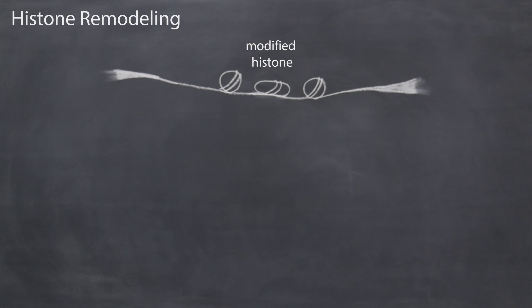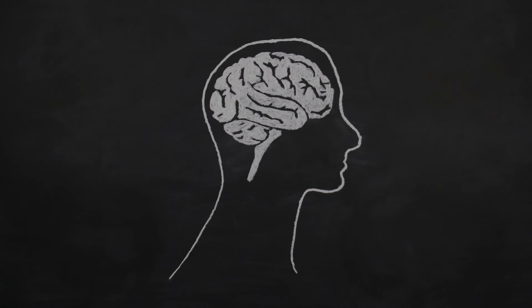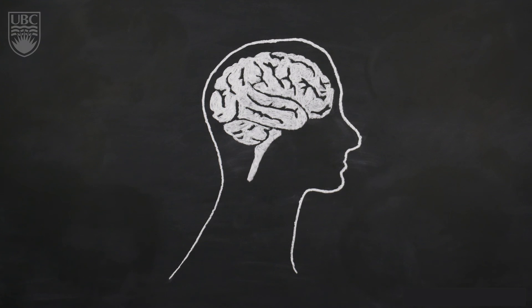The study of epigenetics has shown us that each person's genetic material changes as life experiences accumulate, and there is even evidence that these experience-induced changes can be passed on to future generations.